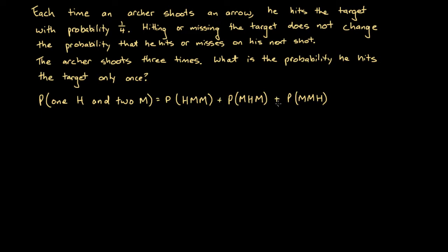The probability that we have one hit and two misses equals: the probability he hits his first shot then misses the rest, plus the probability he misses the first time then hits the second time then misses the third, plus the probability he misses the first two shots and hits the target on his third shot. There's no other way to get one hit and two misses, so this is exhaustive.